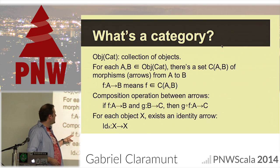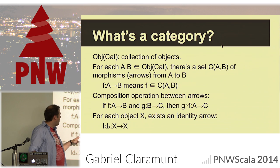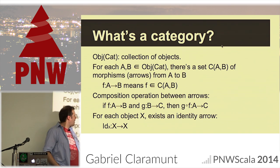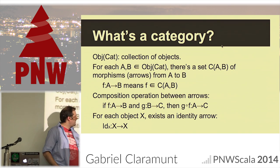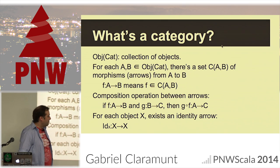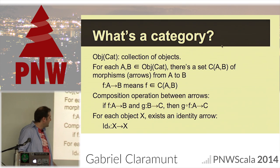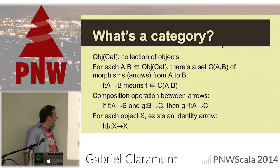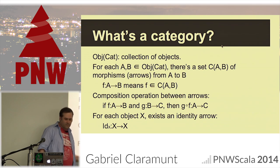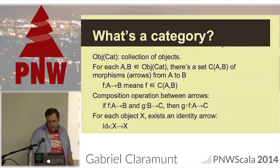Composition: if I have one arrow that goes from A to B and another arrow that goes from B to C, then the composition goes from A to C and exists. Identity means there exists an arrow that goes from any object to that same object.